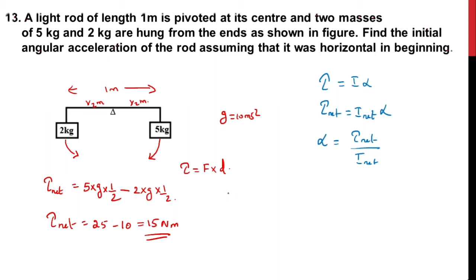What is the net moment of inertia here? Let us calculate the total moment of inertia. I_net equals the moment of inertia due to 5 kg, so 5 times r². What is the r value? (1/2)² because we know I = mr², that is the formula.